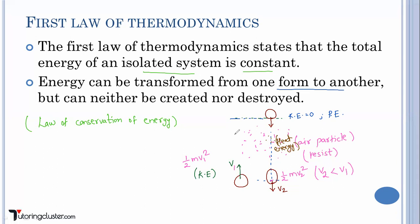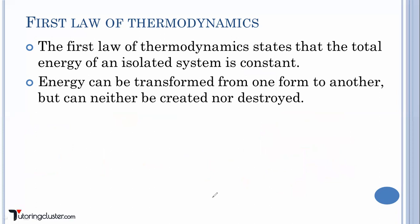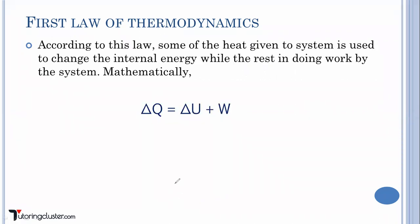Another example is a heat engine or simply an engine. Inside the engine you have fuel, which has chemical energy. When you burn the fuel, you are converting this chemical energy into mechanical energy, so your automobile or car comes into motion. We are converting one form of energy into another form.